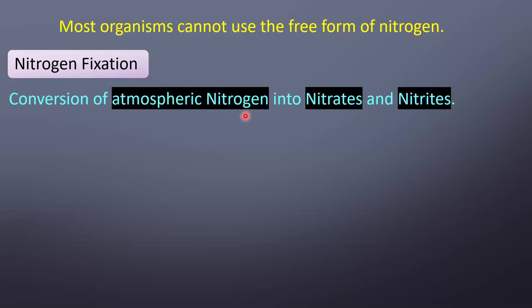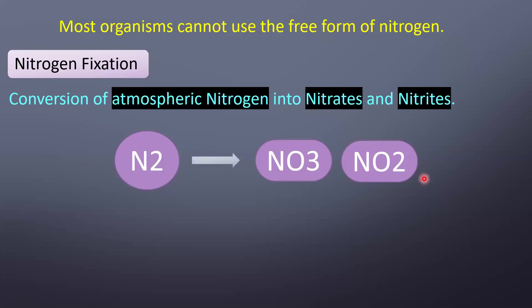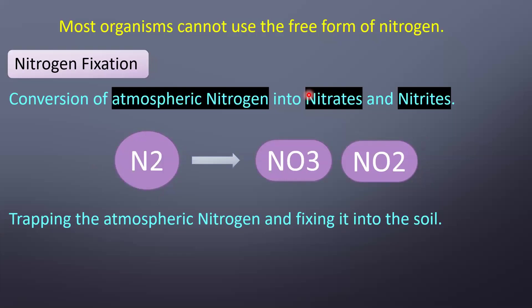The conversion of atmospheric nitrogen into salts — nitrate and nitrite are the salts of nitrogen. NO₃ is nitrate, NO₂ is nitrite. You convert the atmospheric nitrogen N₂ into nitrate and nitrite. Trapping the atmospheric nitrogen and fixing it into the soil is nothing but nitrogen fixation.